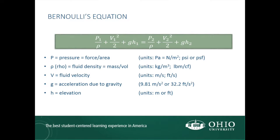V is the fluid velocity with units of meters per second or feet per second. G is the acceleration due to gravity, which we know is 9.81 meters per second squared or 32.2 feet per second squared. Finally, H is the elevation of the points in question, with units of meters or feet.